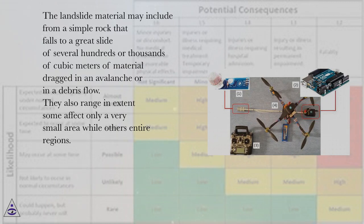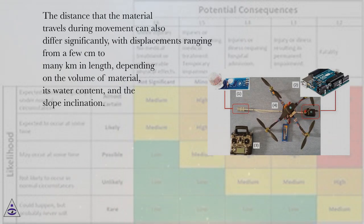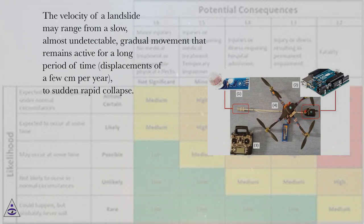Landslides also range in extent — some affect only a very small area while others affect entire regions. The distance traveled during movement can differ significantly, with displacements ranging from a few centimeters to many kilometers, depending on the volume of material, its water content, and slope inclination. Velocity may range from a slow, almost undetectable gradual movement of a few cm per year to a sudden rapid collapse.